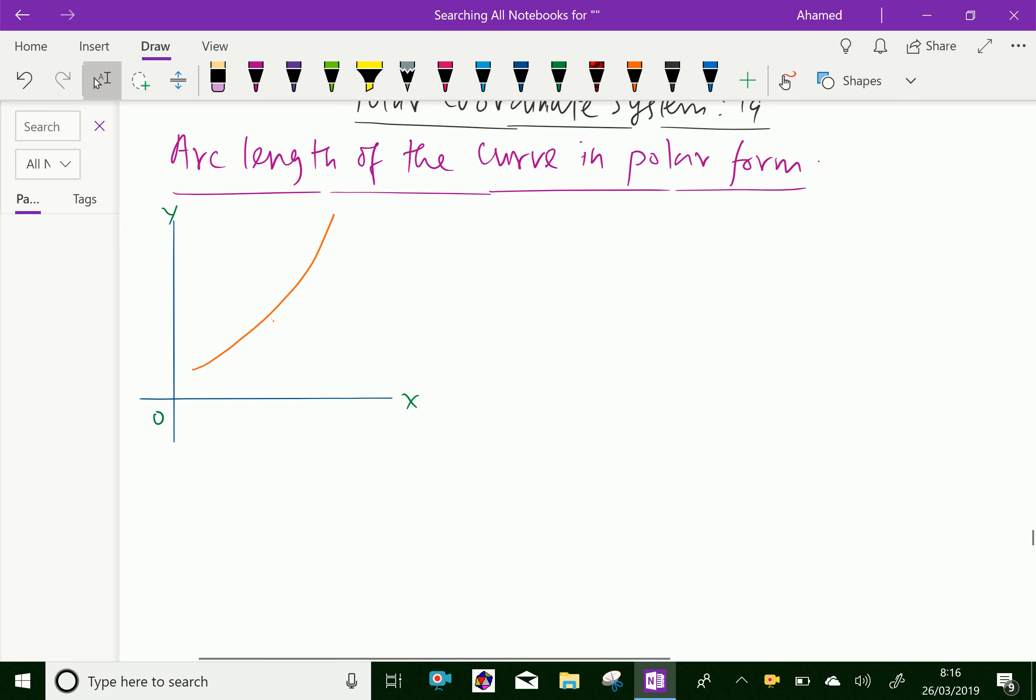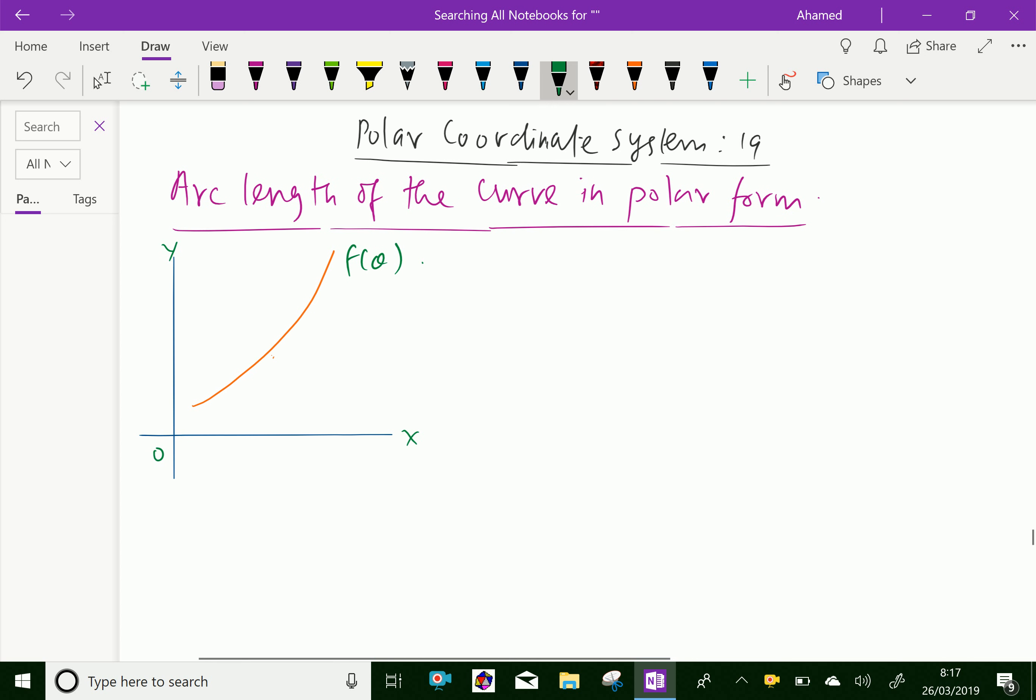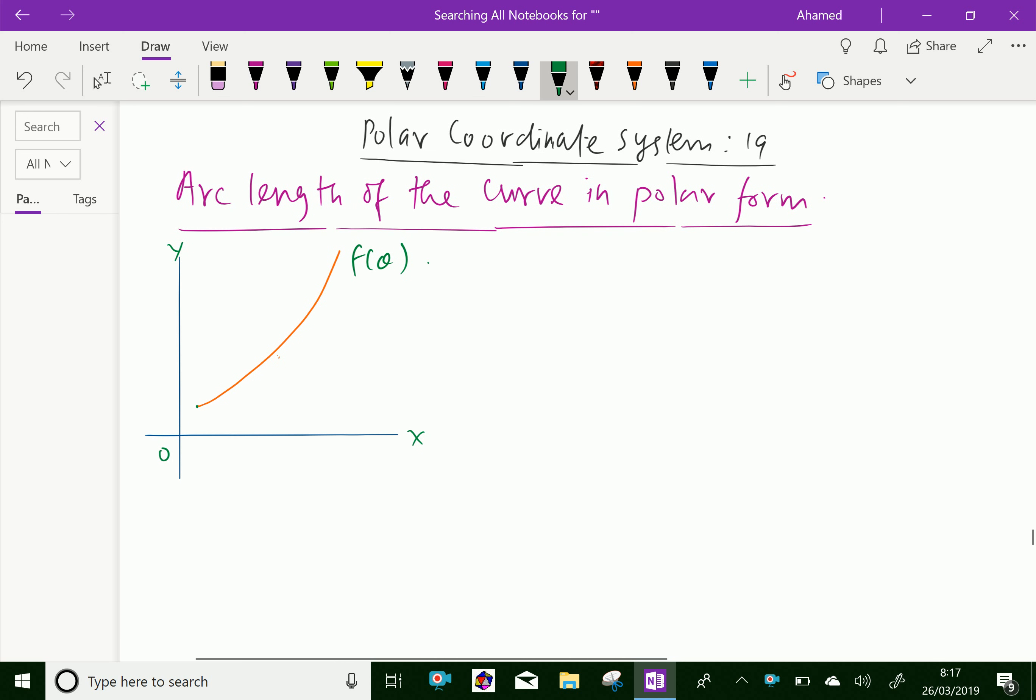First, look at this figure. The curve f of theta is given in x, y coordinates. Take this full length as arc length L. Point A is here, and point B is here.